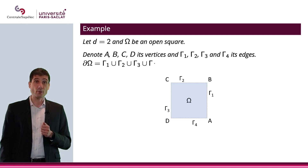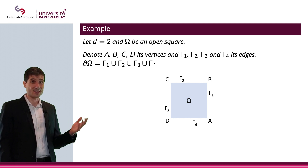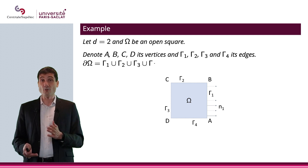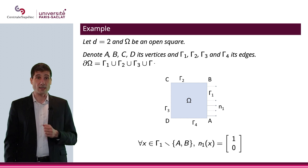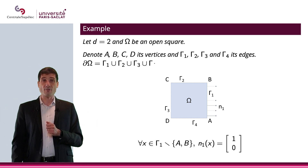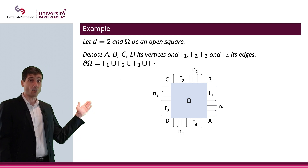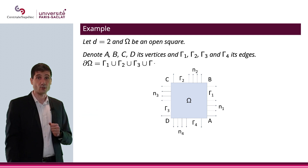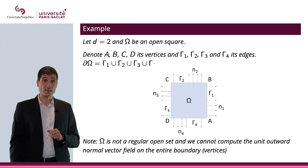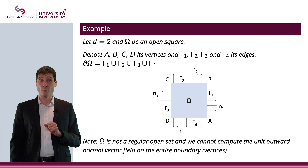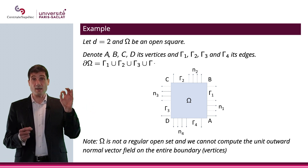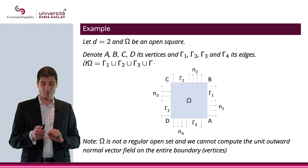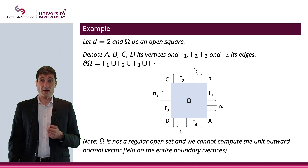Now let's look at what happens for a square ABCD. It has four edges and four vertices A, B, C, D. On edge Γ₁ the normal vector field is (1, 0); on Γ₂ it is (0, 1); on Γ₃ it is (-1, 0); and on Γ₄ it is (0, -1). I should point out that we cannot compute the outward normal vector field at A, B, C, or D. In fact, omega is not a regular open set of class C^1 at those vertices — it is only regular on each edge, excluding the endpoints.